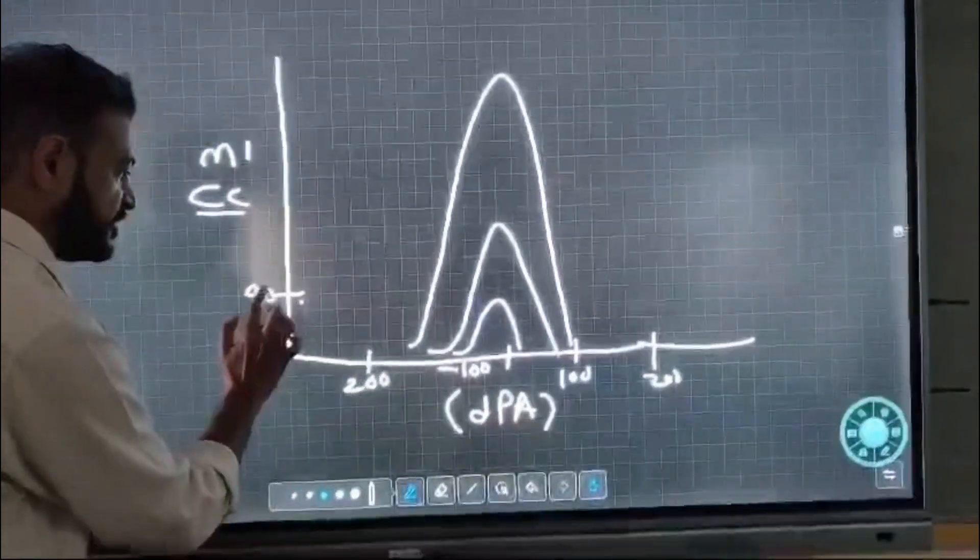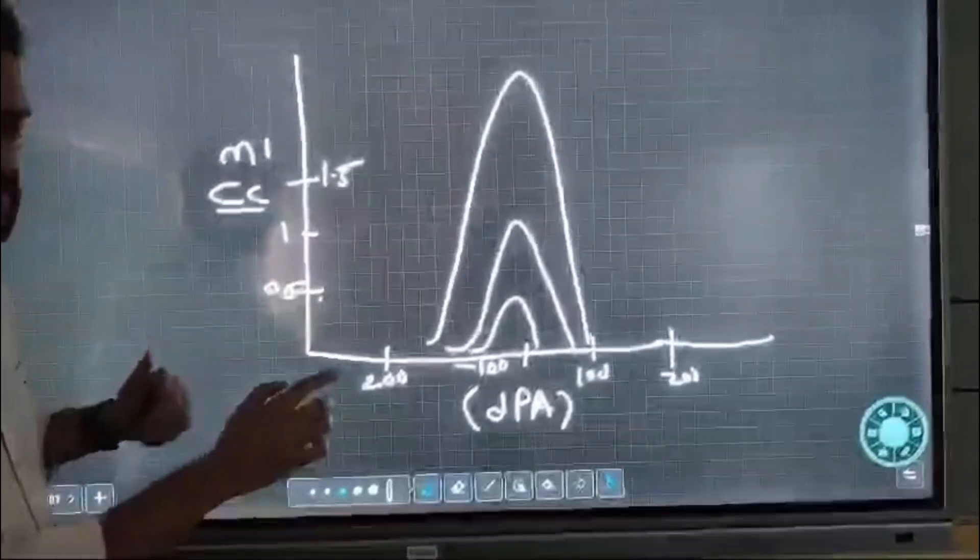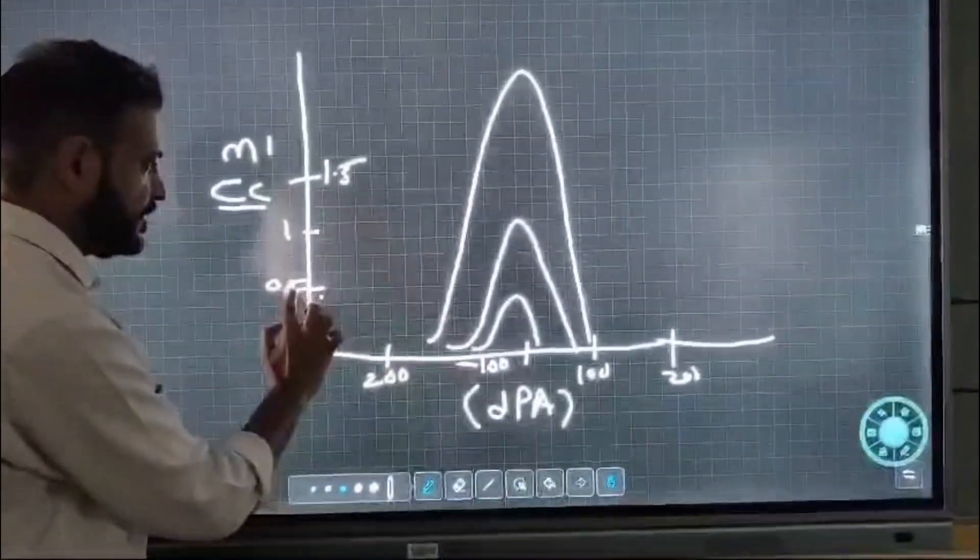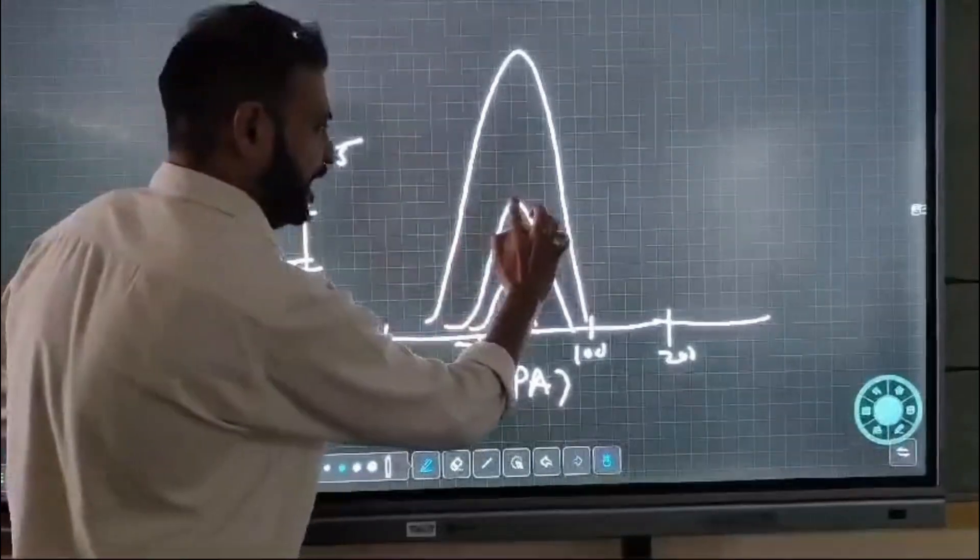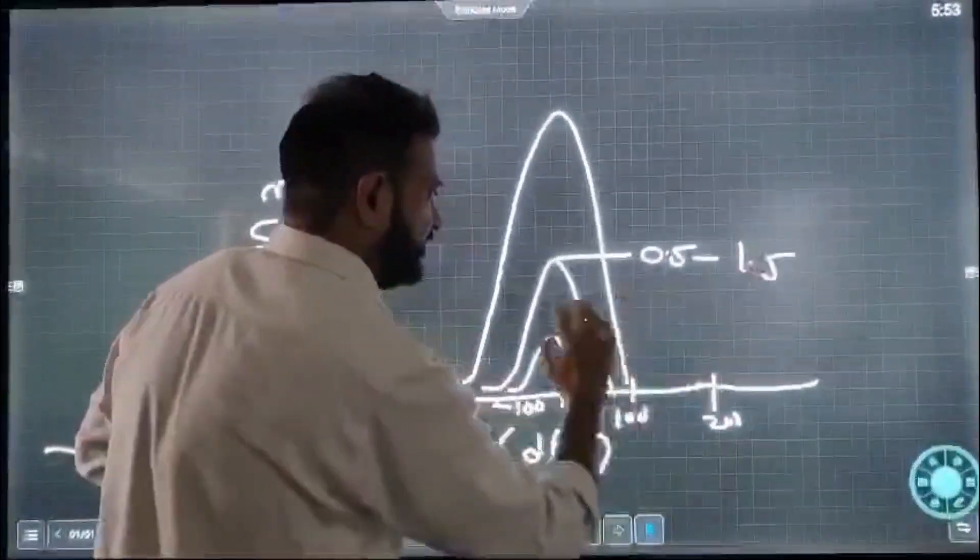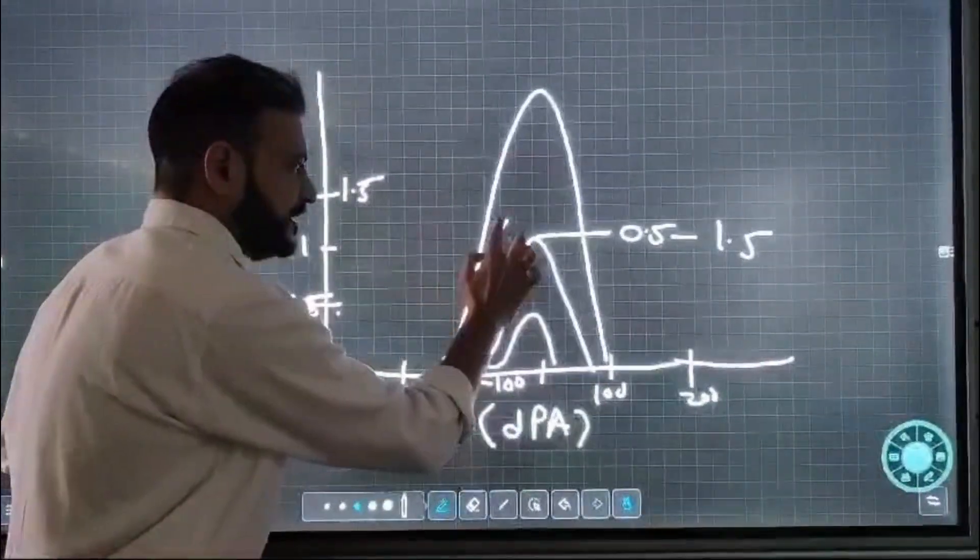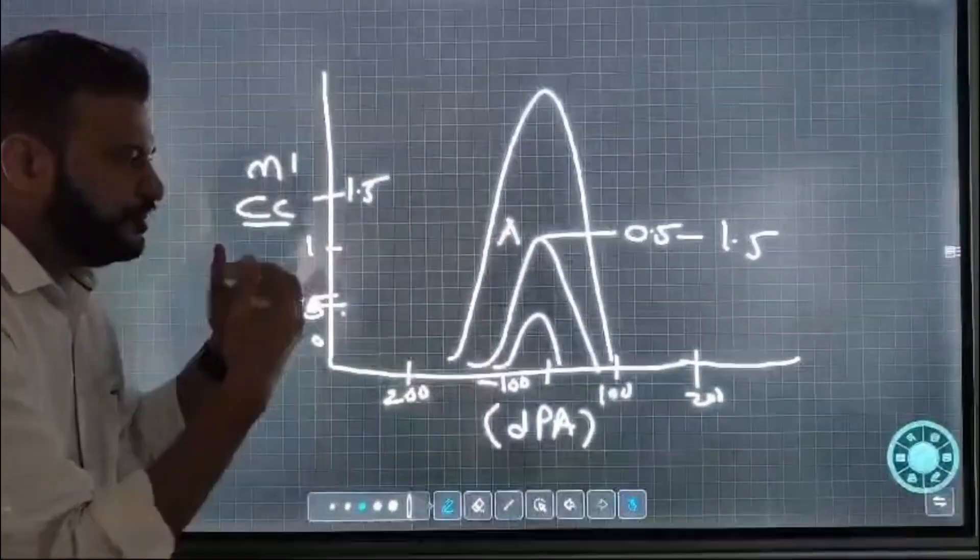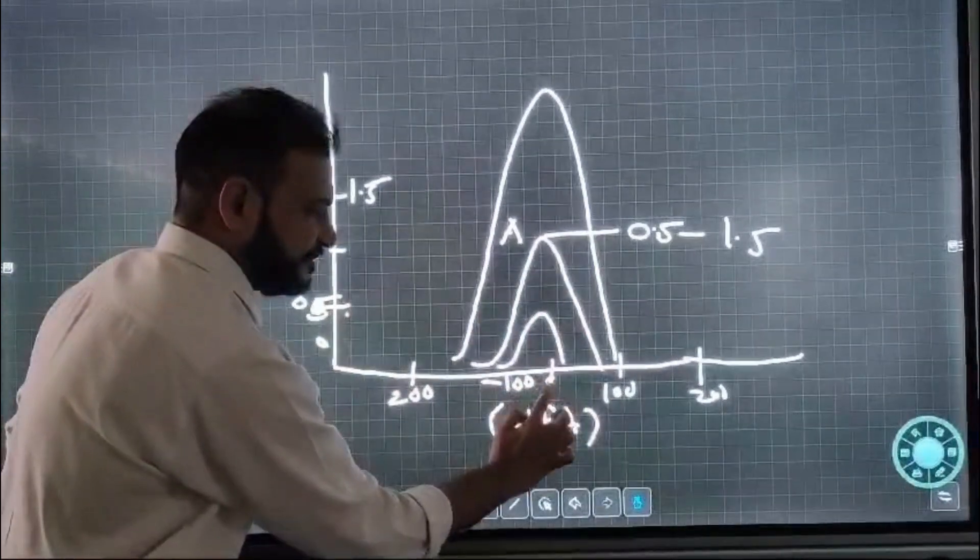If the height of the curve is between 0.5 to 1.5, this is a normal tympanogram, also called a Type A tympanogram. How do we read it? It is normal compliance at zero pressure.